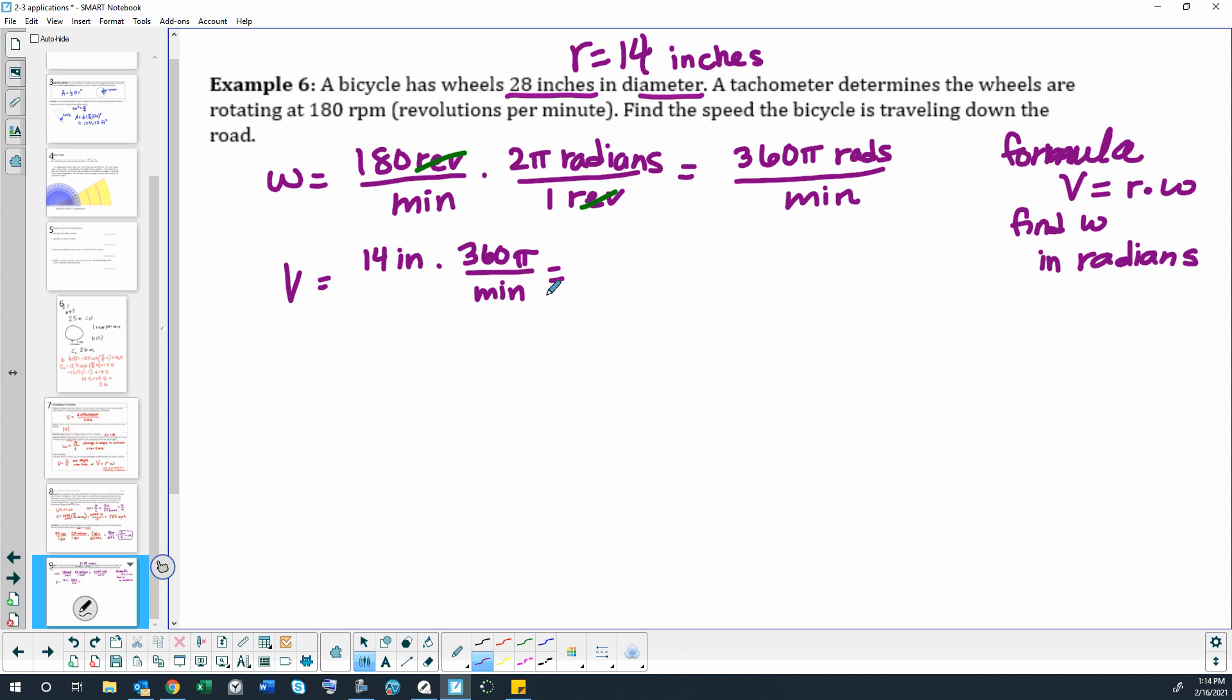You can leave it in that unit for now if you would like to do this in individual pieces. For that I got 5040π inches per minute.